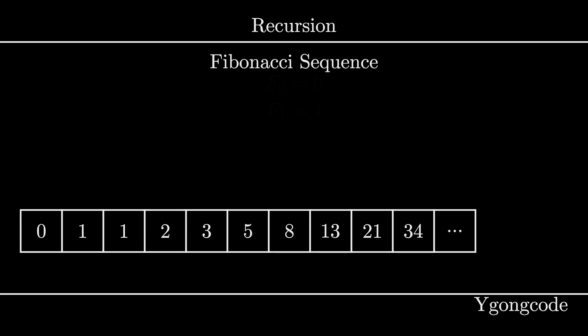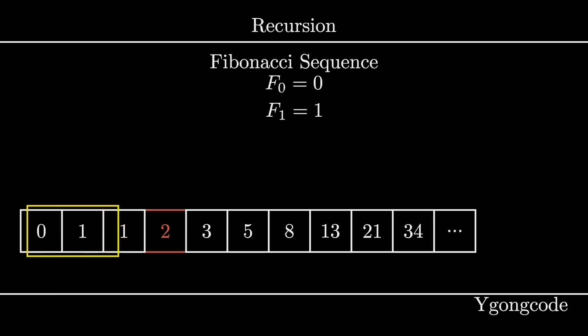A recursive program also requires terminating conditions called base cases. In the case of the Fibonacci sequence, there are two base cases: when n is zero and when n is one, since the first and second numbers in the sequence do not have two or more previous numbers.